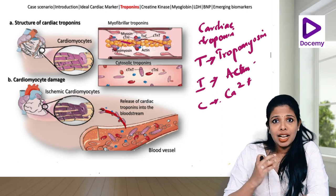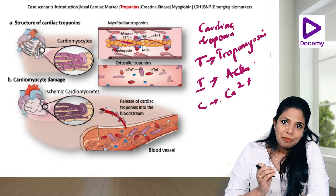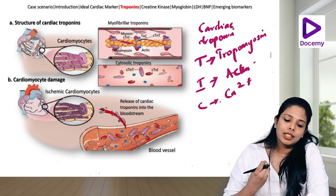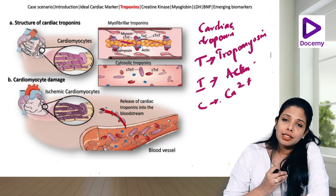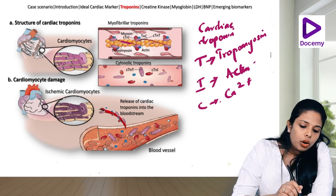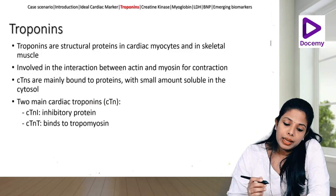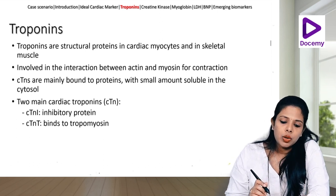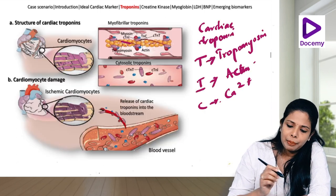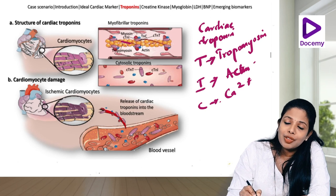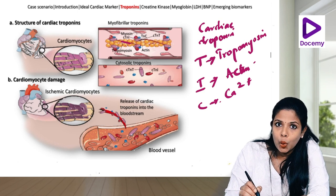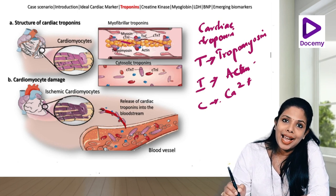The troponin complex helps in the contraction and relaxation of cardiac muscles by facilitating the formation of the actin-tropomyosin complex. Regarding troponins in acute myocardial injury: they are mainly protein-bound, with a very small amount free. Approximately 90% of troponins in the myocardium are protein-bound — bound to tropomyosin, actin, and calcium — while around 10% are cytosolic troponins which are free.